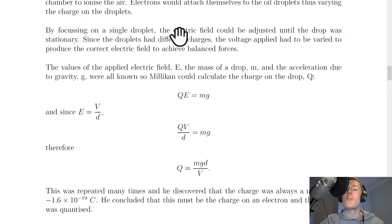By focusing on a single droplet the electric field could be adjusted until the drop was stationary. Since the droplets had different charges the voltage applied had to be varied to produce the correct electric field to achieve balanced forces. The values of the applied electric field E, the mass of a drop M, and the acceleration due to gravity G were all known. So Millikan could calculate the charge on the drop Q.